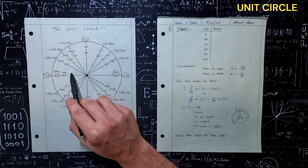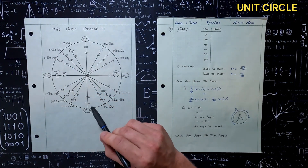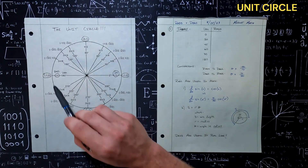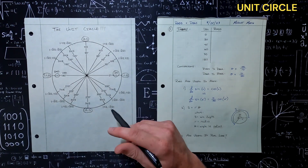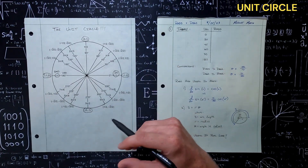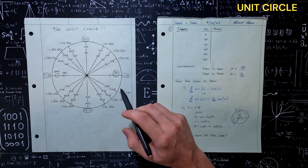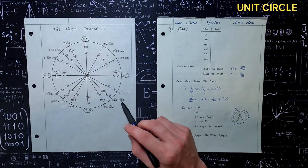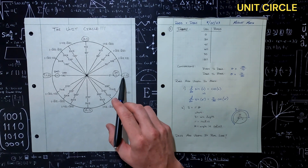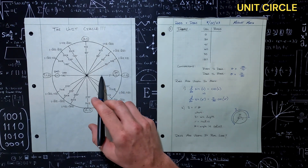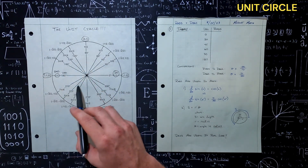We're coming all the way over here, 180 degrees. We have a value of pi for our radians. That's just part of the theory — part of what we're told. We can prove that later. But just get yourself familiar with this unit circle.